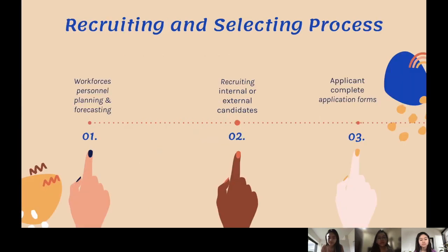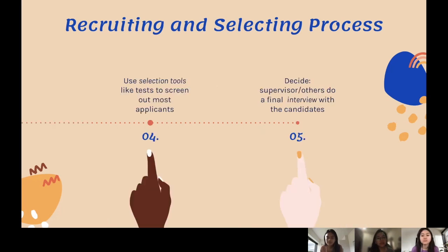The first topic we'll talk about is the recruiting and selecting process. The first step is workforce personal planning and forecasting, then recruiting internal or external candidates, then applicants complete application forms. The fourth step is using selection tools like tests to screen out most applicants, and the last step is when supervisors or others do a final interview with the candidate.